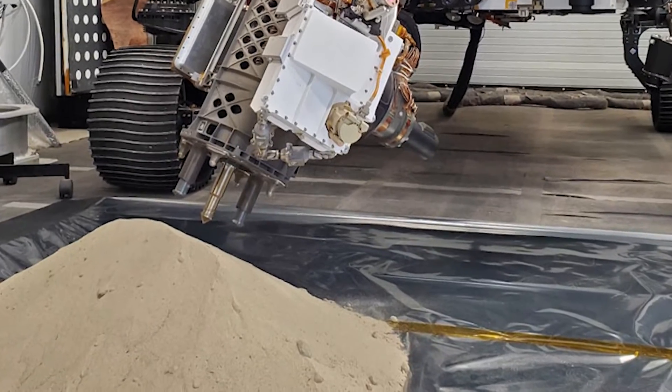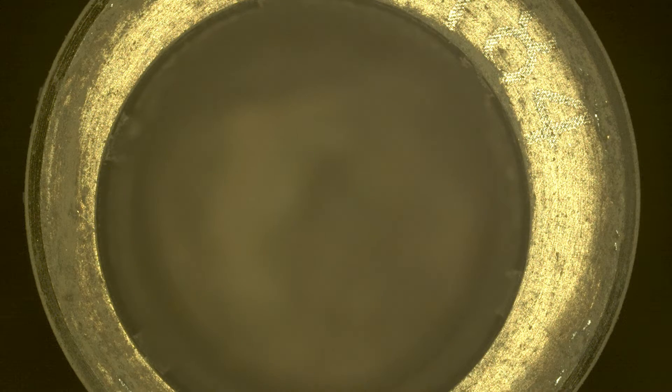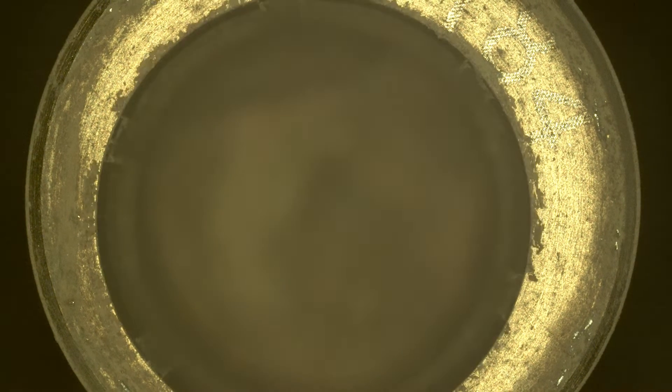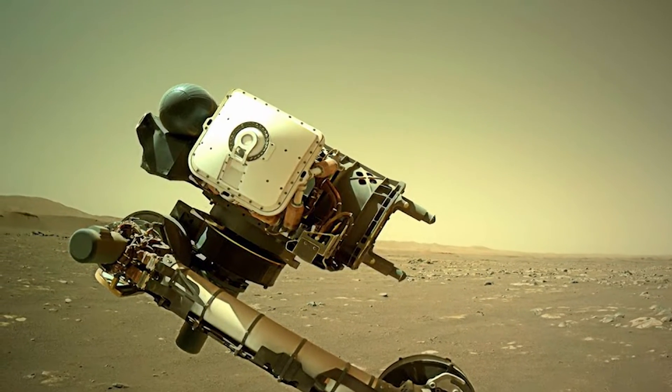Perseverance used a drill resembling a spike with tiny holes on one end to grab loose material to collect regolith samples. Previously, the rover used a drill attached to its robotic arm to extract rock cores.